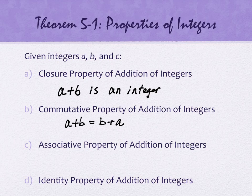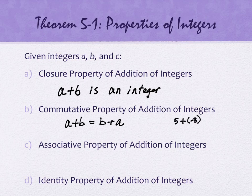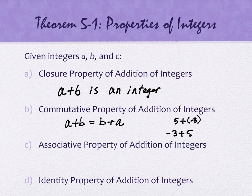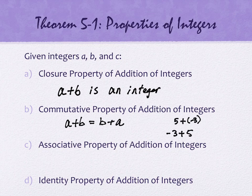The commutative property of addition says that when I add integers together in either order, I get the same quantity: A plus B equals B plus A. That's really helpful — a student who keeps doing negative 3 plus 5 wrong can flip it around to see 5 plus negative 3, which they may handle more easily with their background knowledge of subtraction. So the commutative property is really helpful for addition with integers.